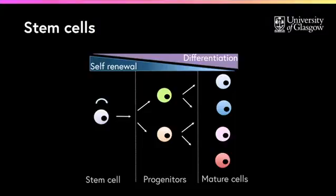have high self-renewal capacity and low proliferation rates. In contrast, mature cells have a limited lifespan, almost no self-renewability, and proliferate fast.